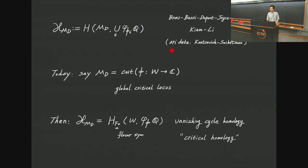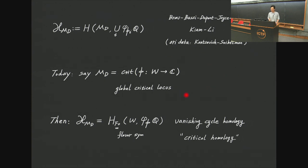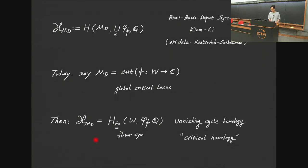The idea is to glue local perverse sheaves of vanishing cycles along the global moduli space and take the hypercohomology of this perverse sheaf. This gluing is done by two groups, and in the gluing we need so-called orientation data due to Kontsevich-Soibelman, which is the square root of the virtual canonical bundle. For simplicity today, assume M_D is a global critical locus from a smooth variety W and a regular function on W, so M_D is the global critical locus and we do not need to worry about the gluing.